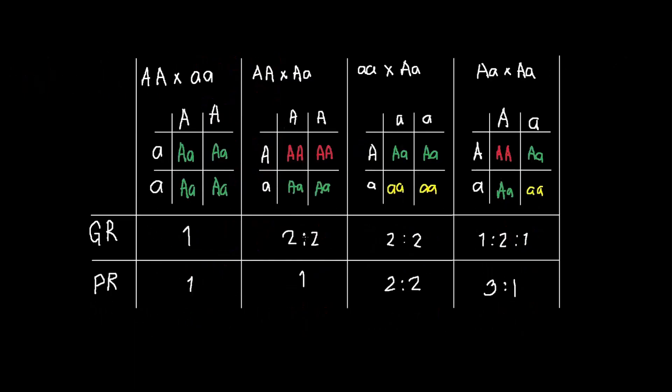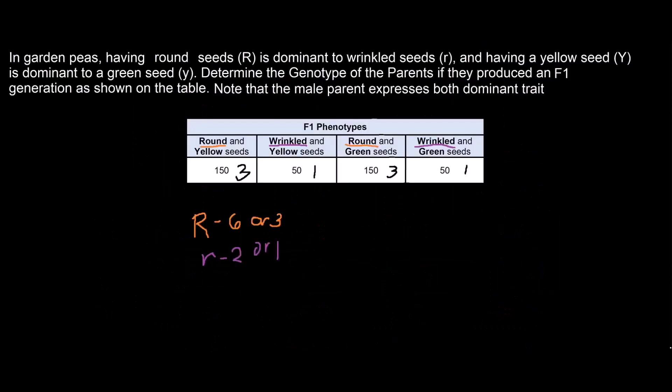Based on our table, a phenotypic ratio of 3 is to 1 would suggest that our parents would be both heterozygotes for that trait. So we can take note of that now. We can write that down and both of them would be heterozygotes for the seed shape. We will leave a space for the second trait.